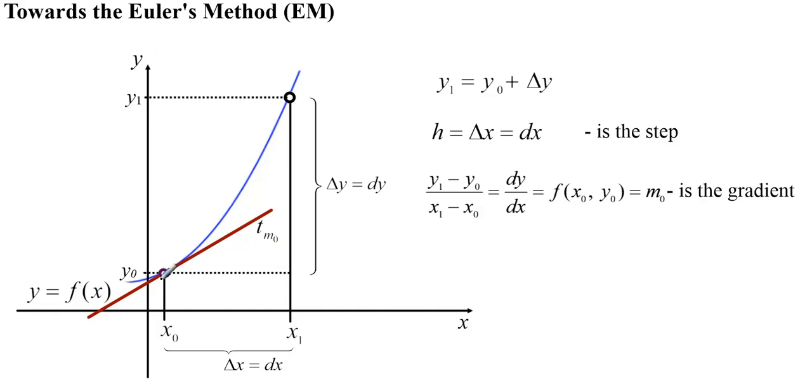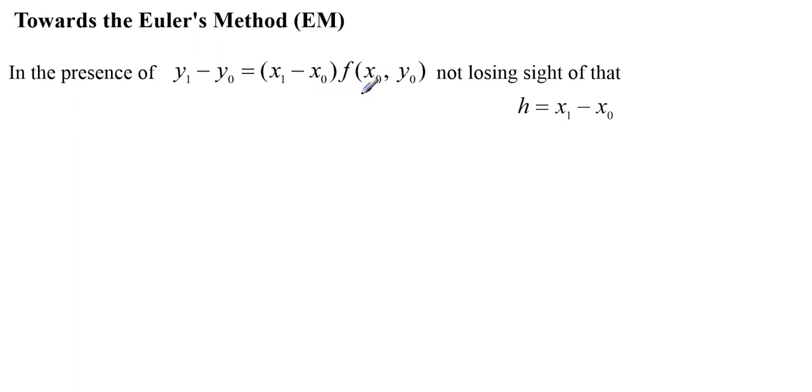Now, focusing on this ratio and the value which is the gradient, we know that we can express that in the following manner by multiplying both sides of the equation by (x1 - x0), where we know that h is actually the difference between x1 and x0. In the presence of this, we can now manipulate this algebraically.